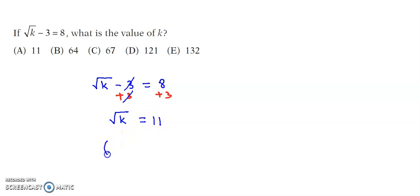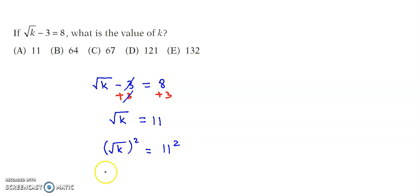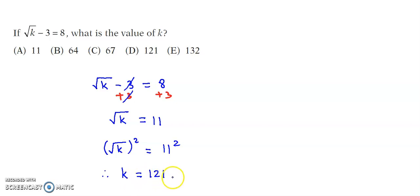Then squaring both sides, this square root gets eliminated, so root k the whole square is equal to 11 square. Finally we have k is equal to 11 squared, which is 121. So k is equal to 121, which is option D.